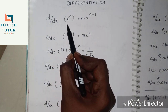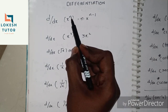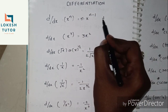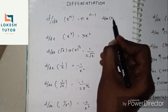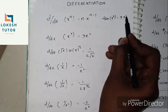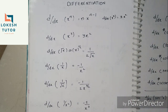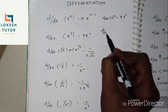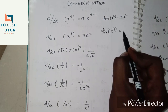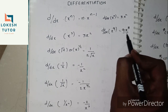d/dx of x^n is n times x^(n-1). For example, d/dx of x³ is 3x², where 3 minus 1 is 2. Another example: d/dx of x^9 — apply the same formula.